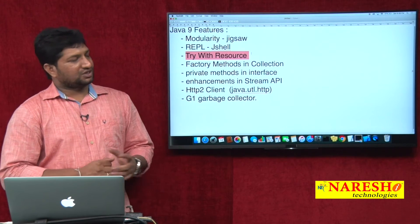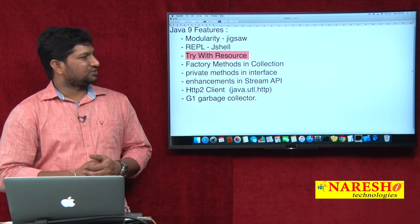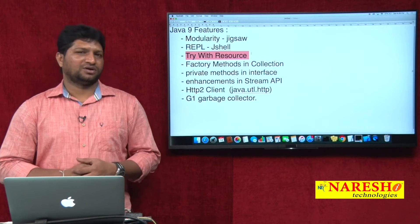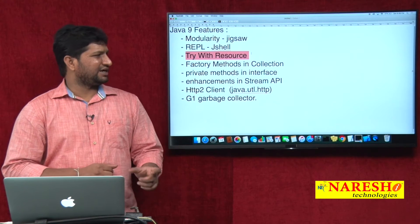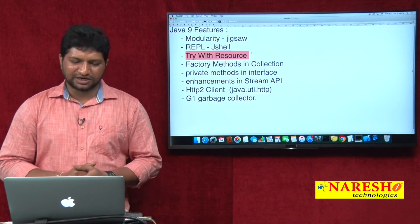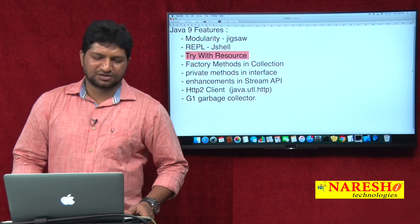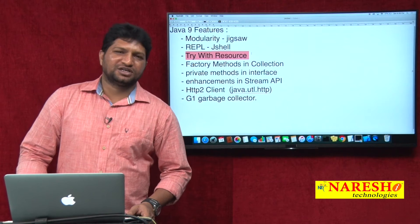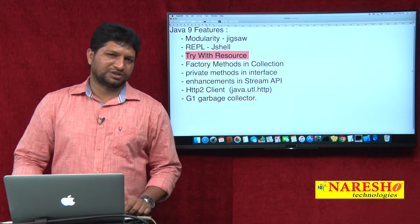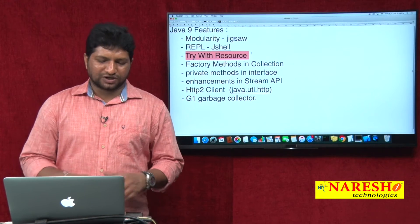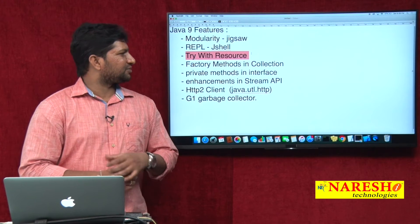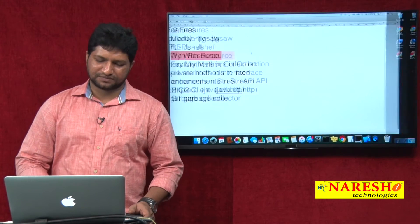Whatever class you are using inside the try-with-resources statement, that class has to provide the implementation for the AutoCloseable interface. The AutoCloseable interface is in the java.lang package. It is a functional interface which contains only one abstract method called the close method. Now let us see what try-with-resources is and what the enhancements are from Java 9.